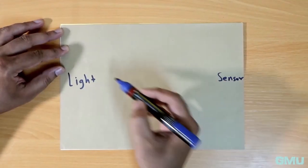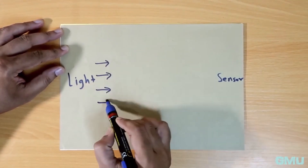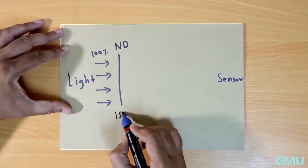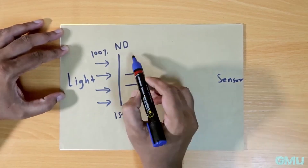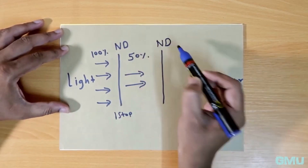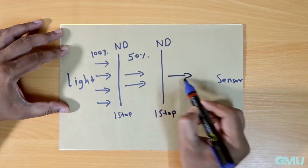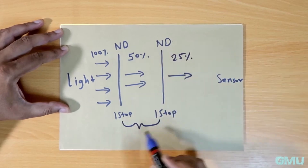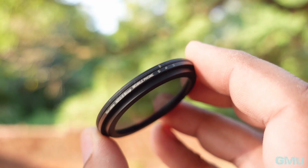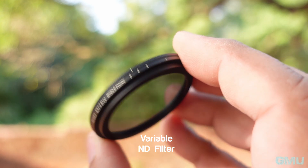When choosing an ND filter for your mobile camera, it's important to consider the filter's density and compatibility with your device. Look for filters that offer different levels of light reduction such as ND2, ND4, and ND8 to give you more versatility — or rather, select a variable ND filter like the one I'm using right now.